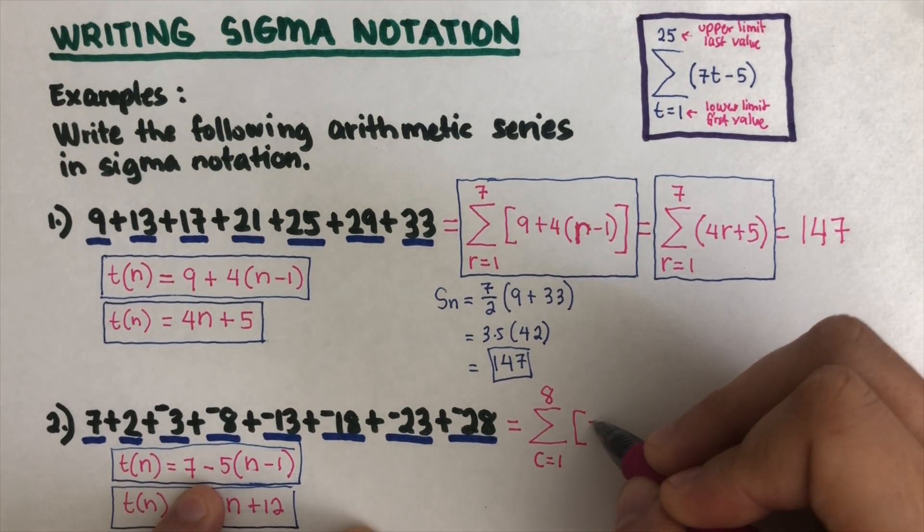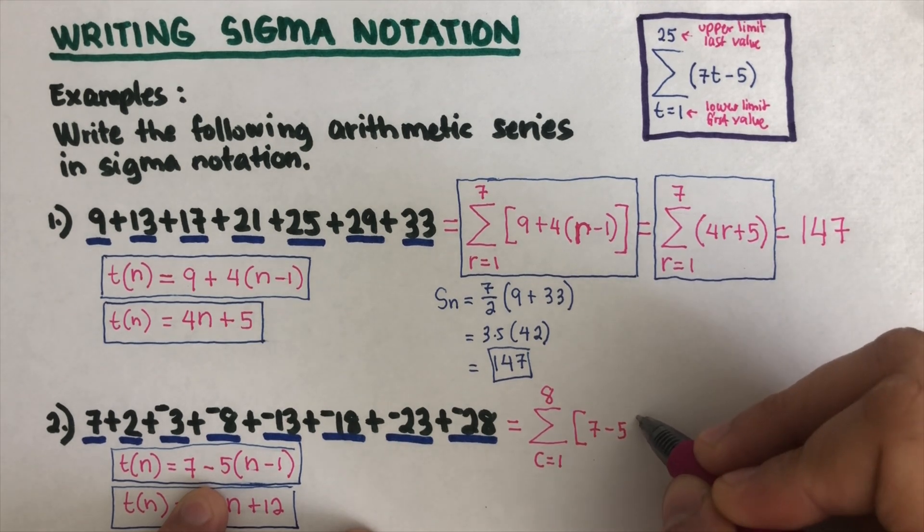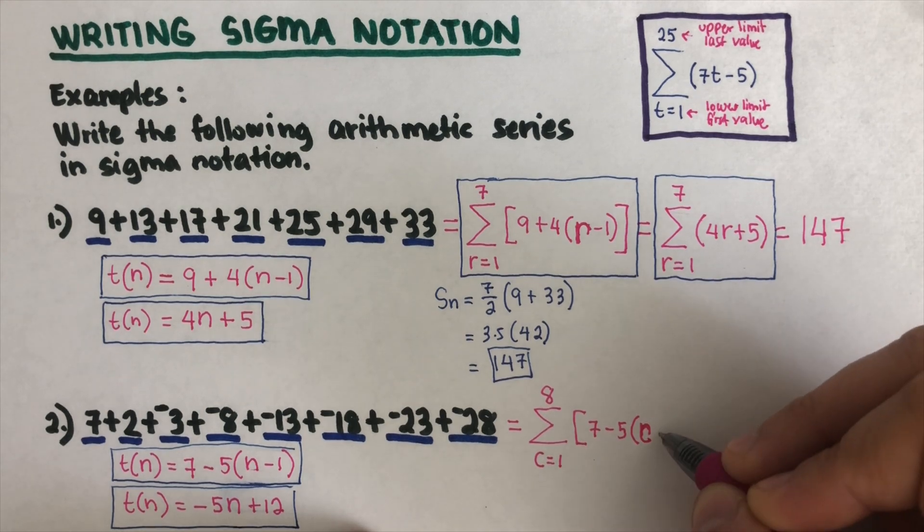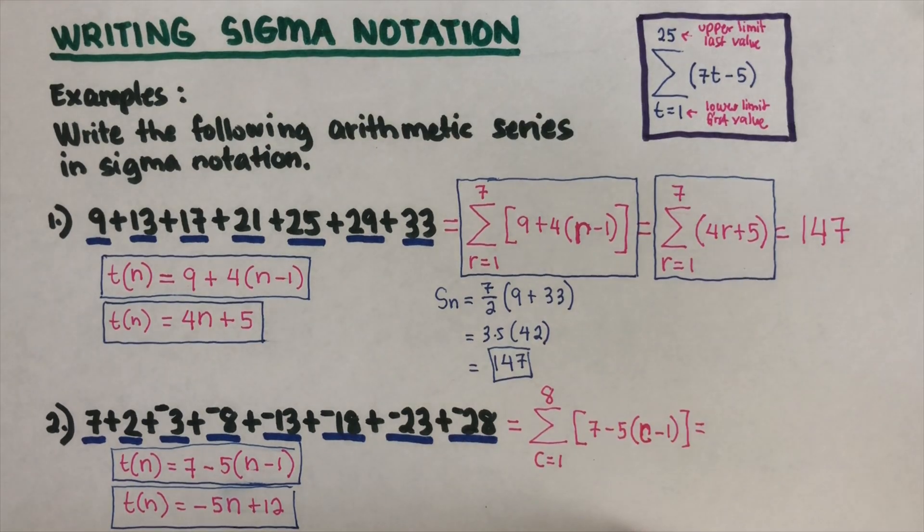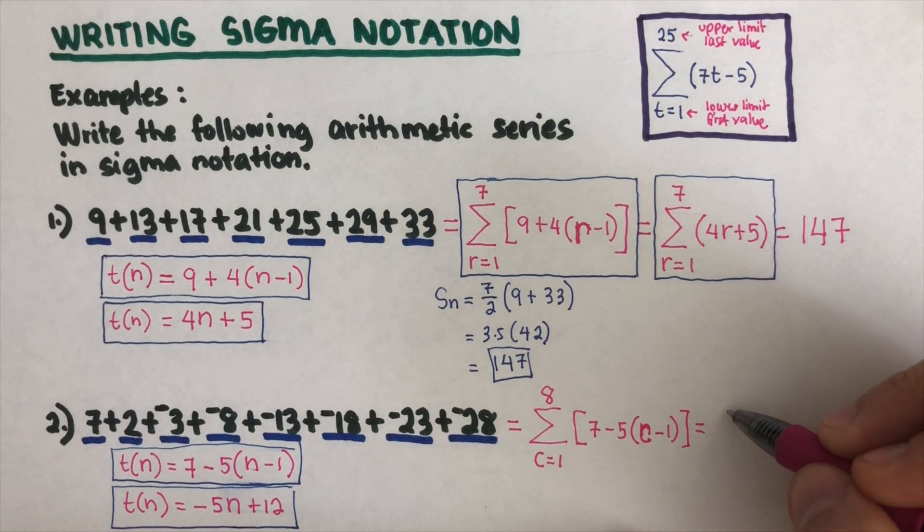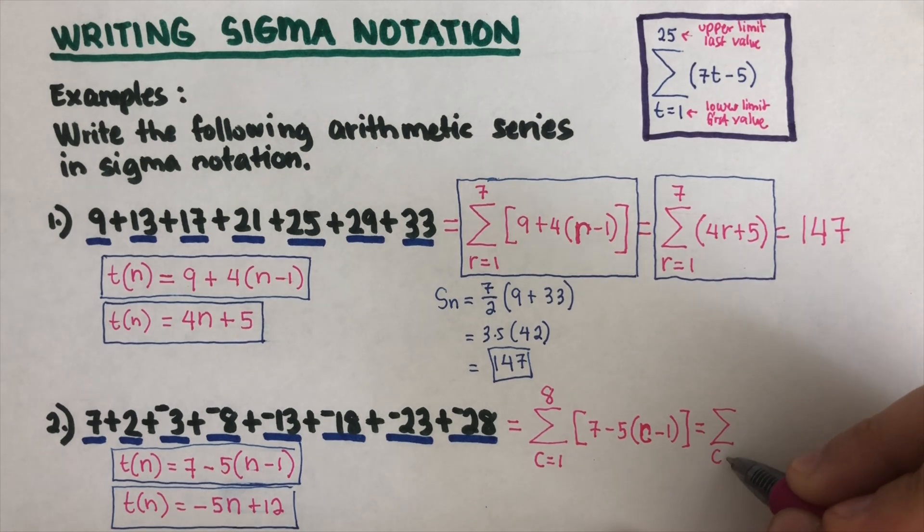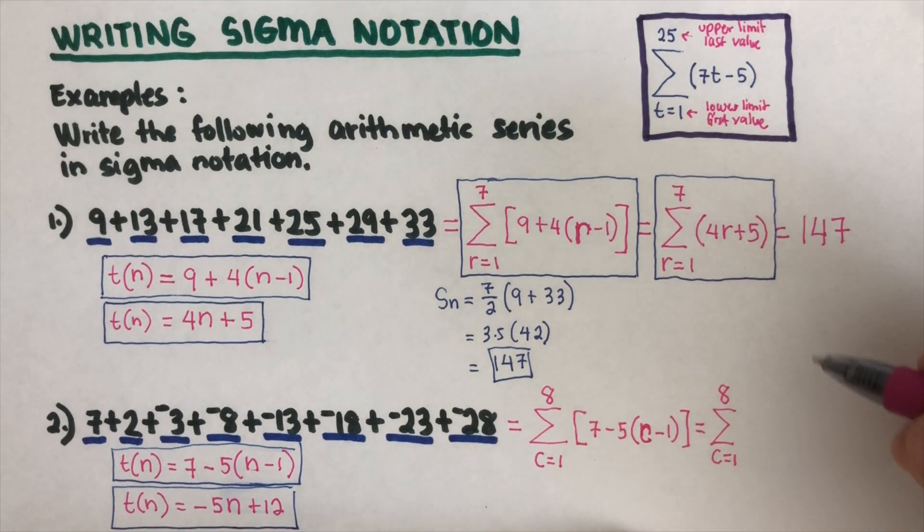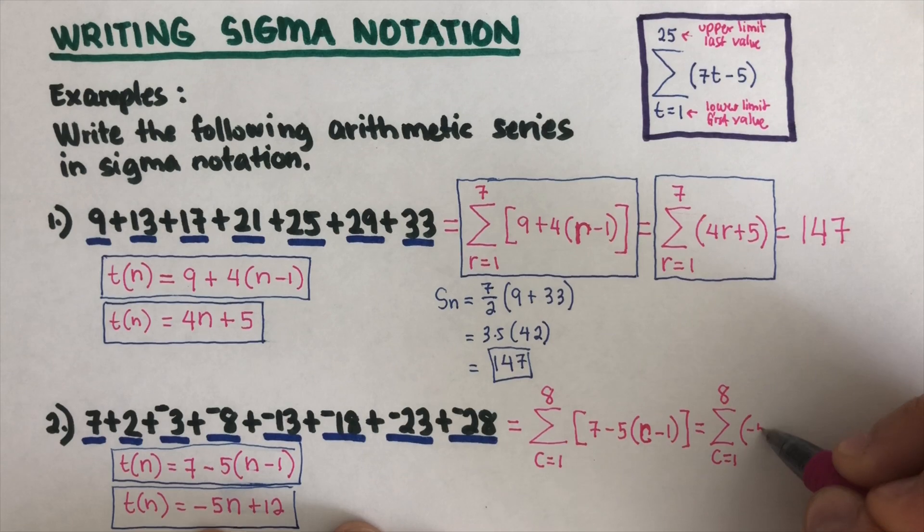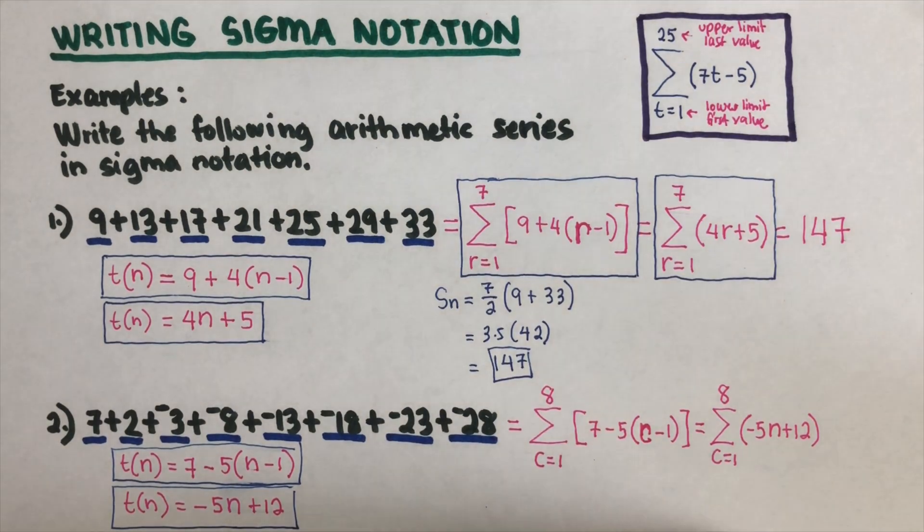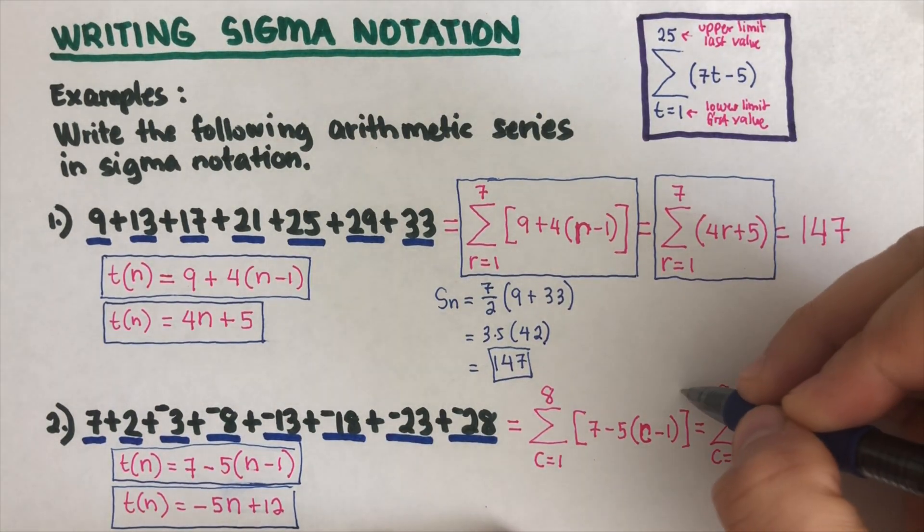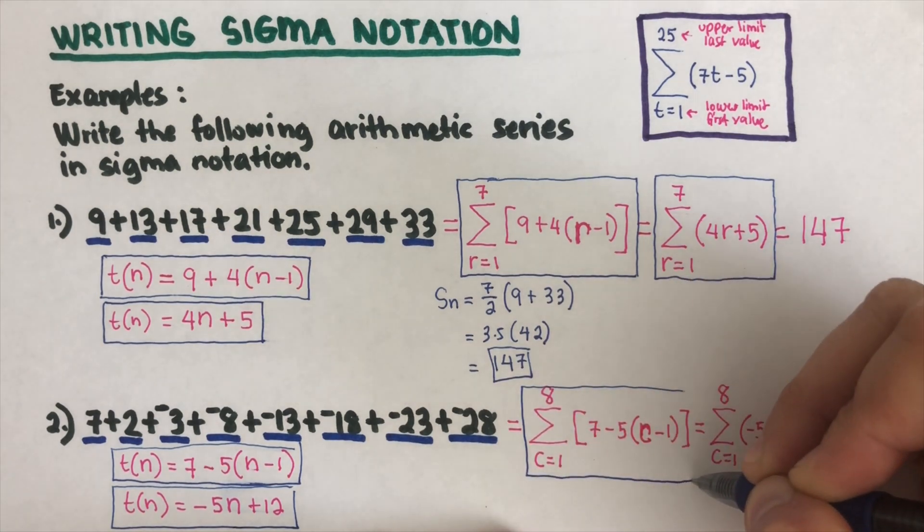This can also be expressed as summation of c equals 1 to 8, and then we use the second equation: negative 5n plus 12. These are the sigma notations for this series.